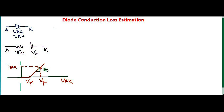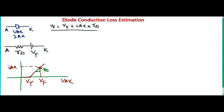Now if you write the equation for VF, it should be: VF equals Vγ plus IAK into RD. So VF = Vγ + IAK · RD. This is a very important equation to remember.